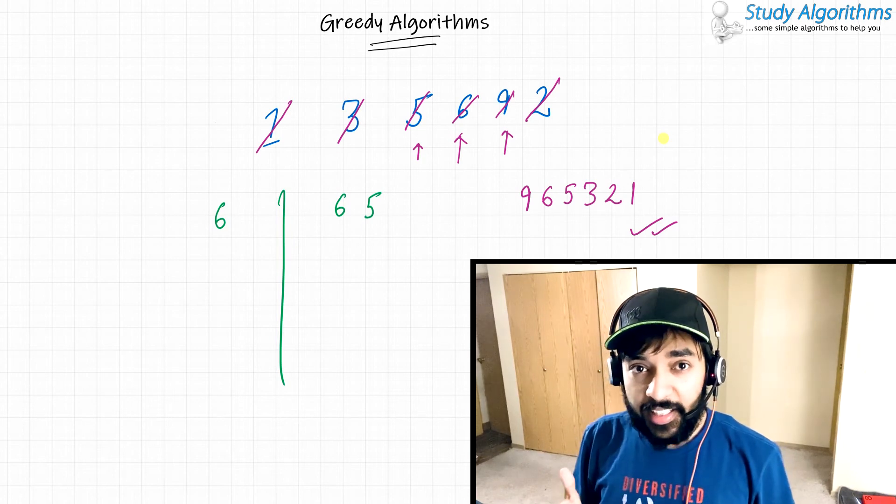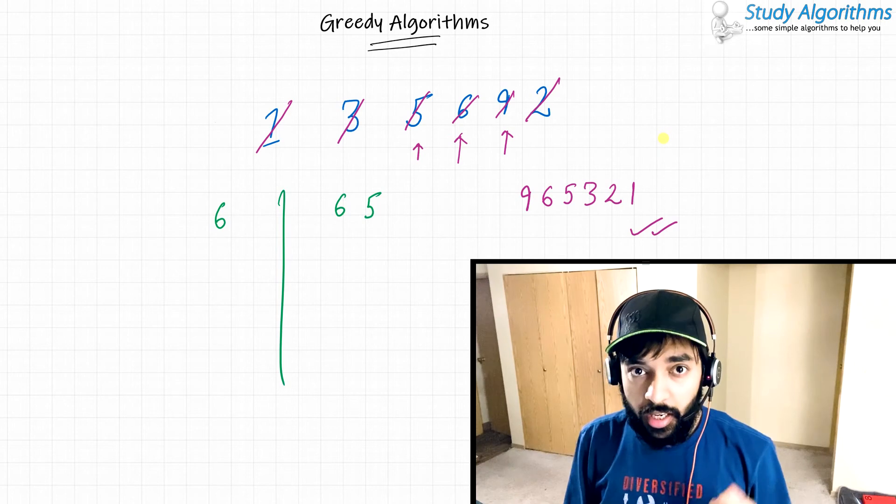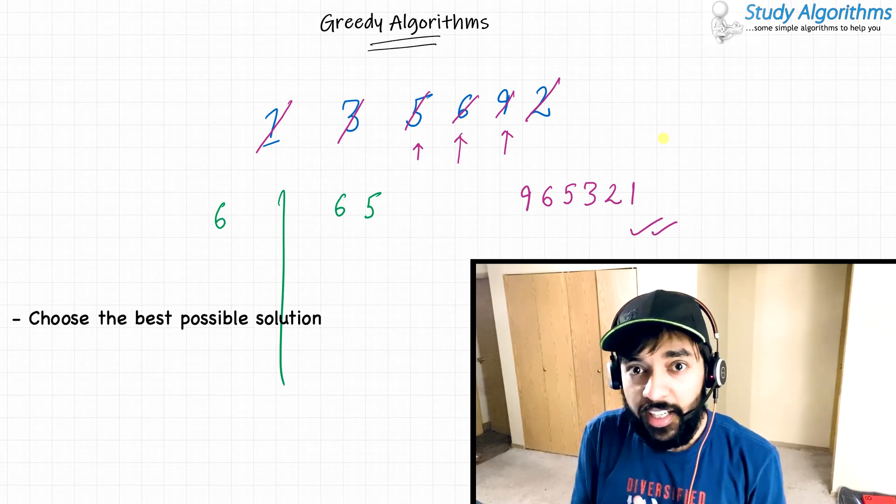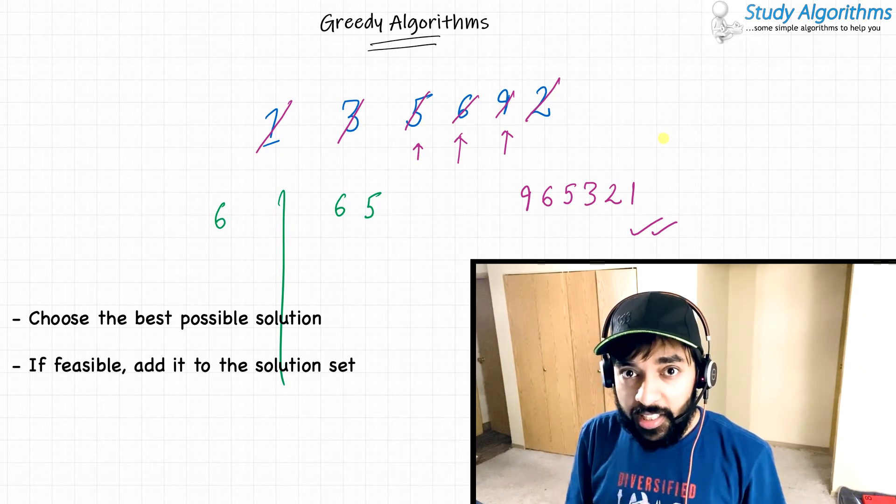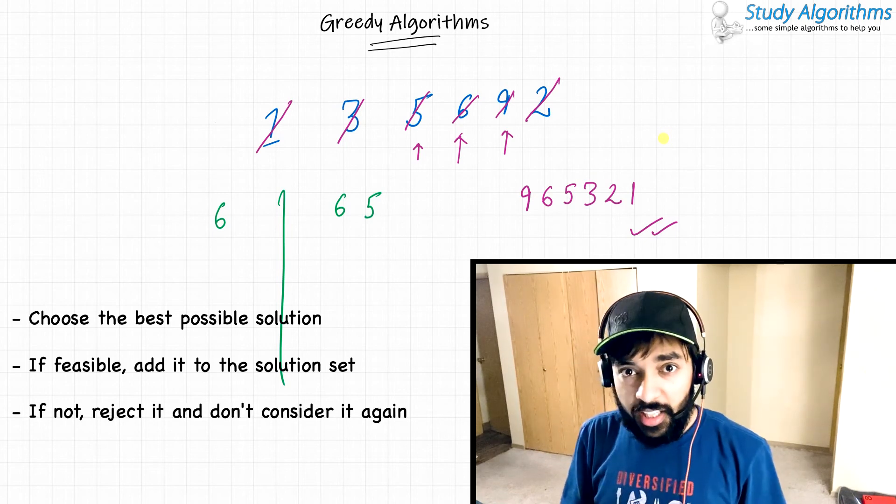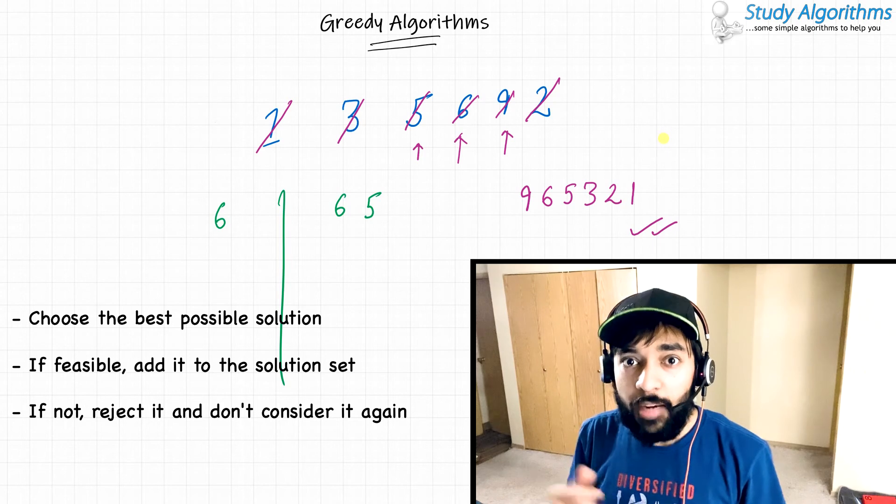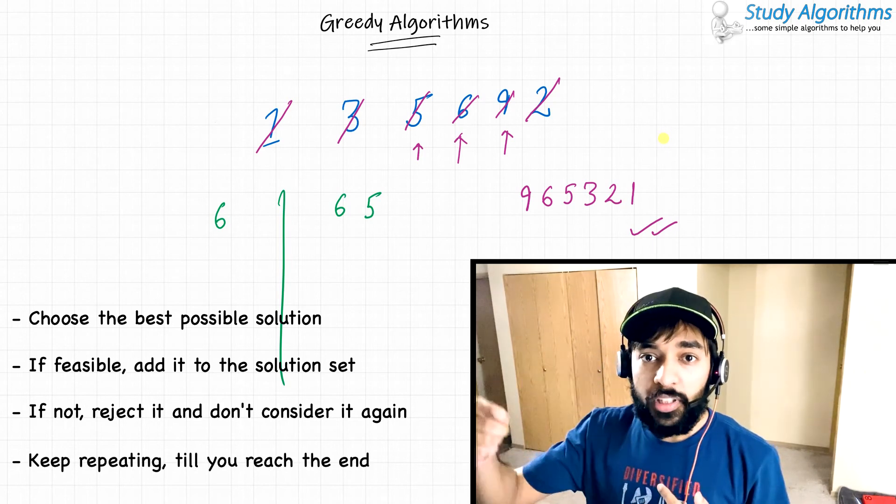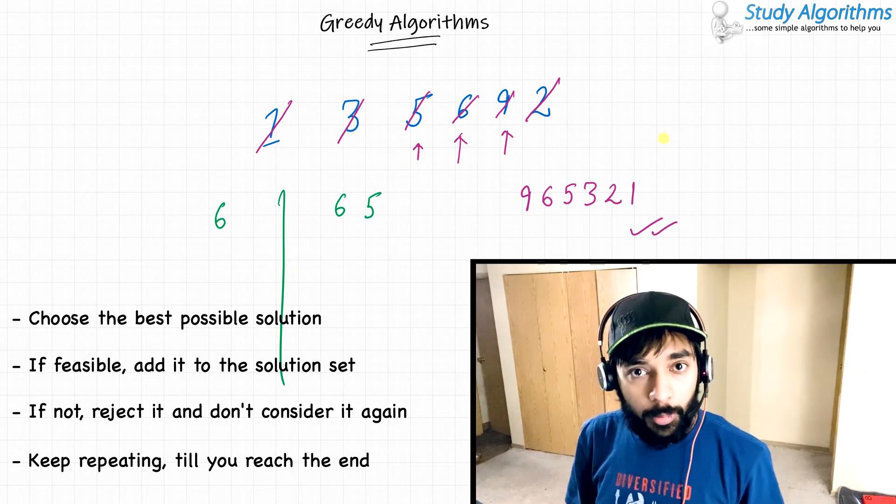So we can say that a greedy algorithm basically consists of four steps. Number one, choose the best possible solution at the current step. Number two, if that solution is feasible, add it to the solution set and move on. Number three, if that solution is not feasible, reject it and never consider it again. Number four, keep looping through this process until you are exhausted of all options.